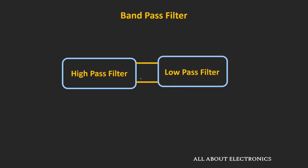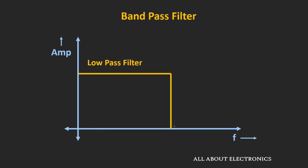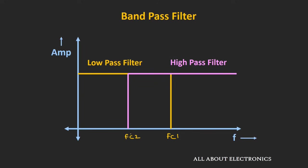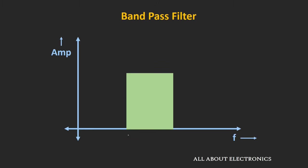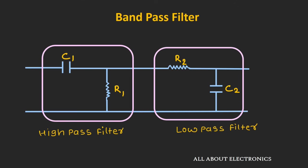Let's understand how this combination will act as a bandpass filter. Let's say we have one low pass filter with a cut-off frequency FC1 and one high pass filter with a cut-off frequency FC2. When we cascade these two filters, we get an overlapping region between the individual responses of the high pass and the low pass filter, and this overlapping region acts as a bandpass filter.